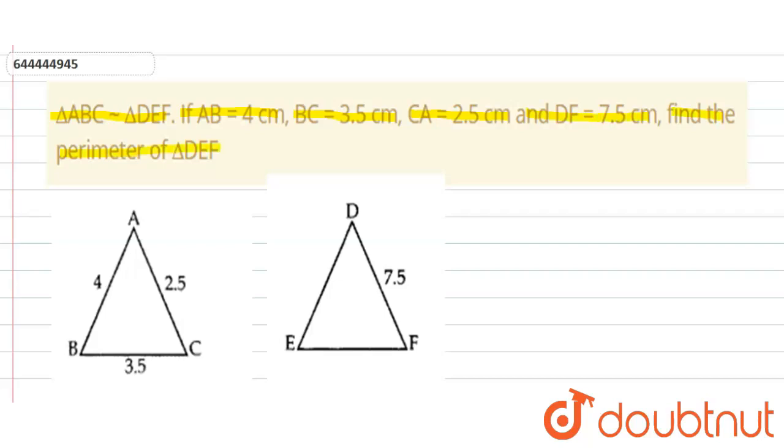We have given that triangle ABC is similar to triangle DEF. Therefore, perimeter of triangle ABC upon perimeter of triangle DEF is equal to AC upon DF.